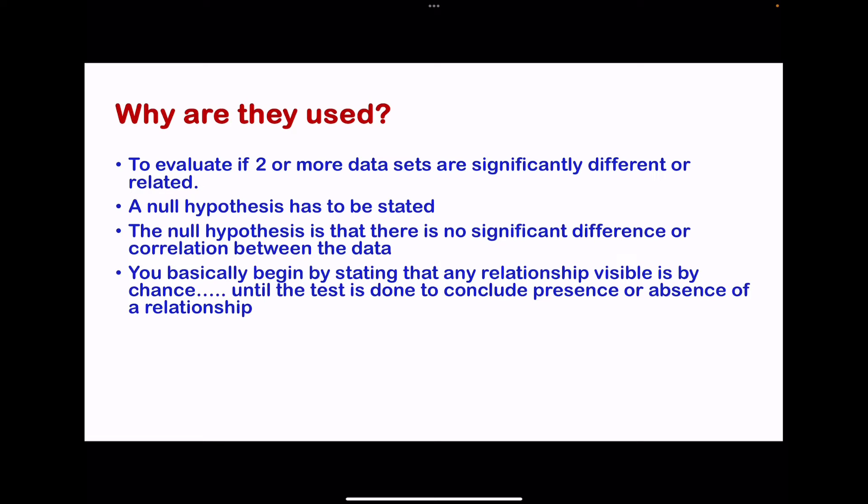The basic concept is you begin by stating that any relationship between the two data or between the dependent and the independent variable is due to chance, and then later you can conclude if a relationship exists or not.